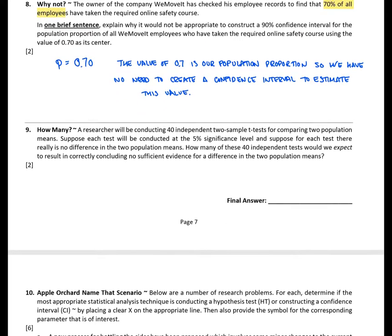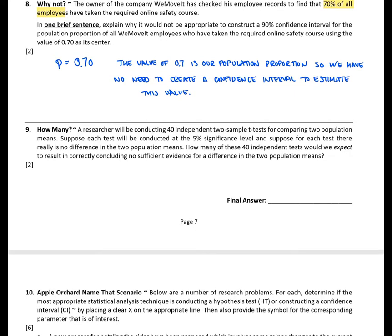Alright. Finally, question nine. How many? A researcher will be conducting 40 independent two-sample t-tests for comparing two population means. Suppose each test will be conducted using a 5% significance level, and suppose for each test there really is no difference in the population means. How many of these 40 independent tests would we expect to result in correctly concluding there is no sufficient evidence for a difference in the two means?